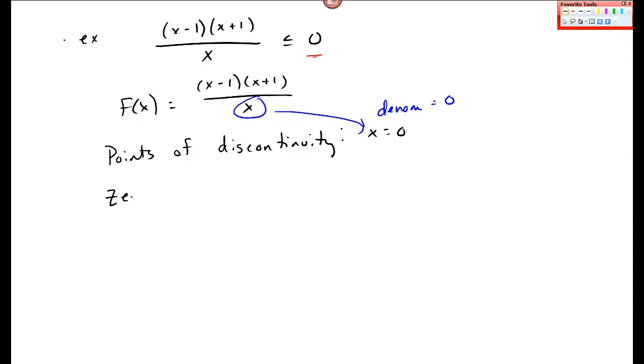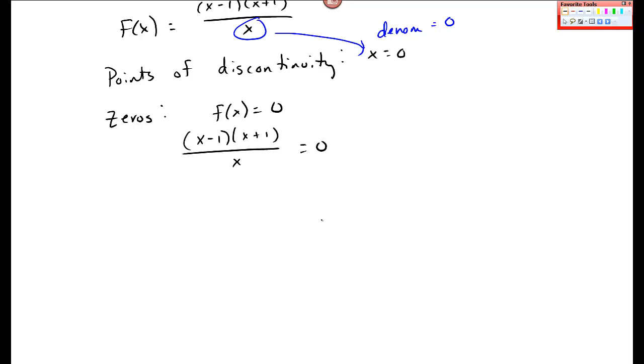Now I need to also, that's the only point, so also zeros. So I set this function f of x equal to zero and solve. And when I solve this, I multiply both sides by the denominator, and really I end up getting zeros of the numerator as zeros of this function.